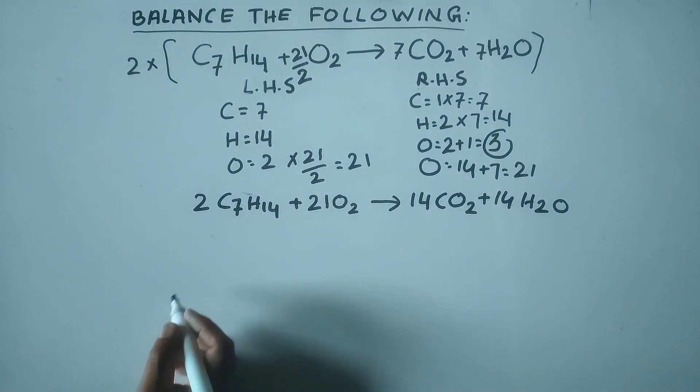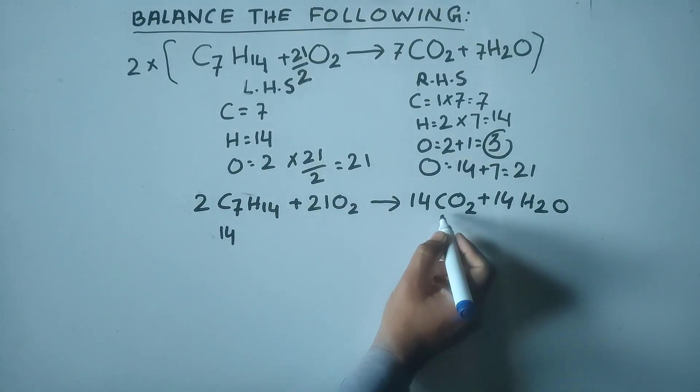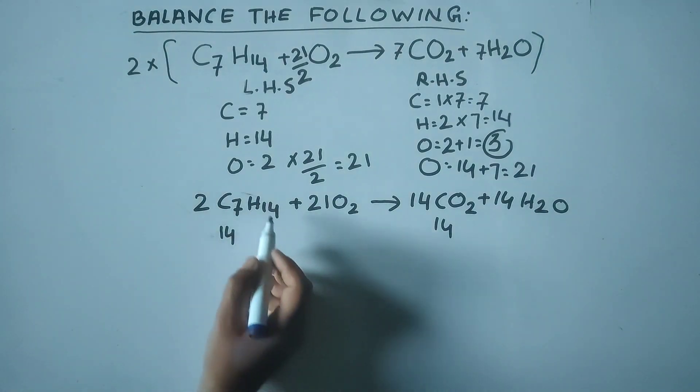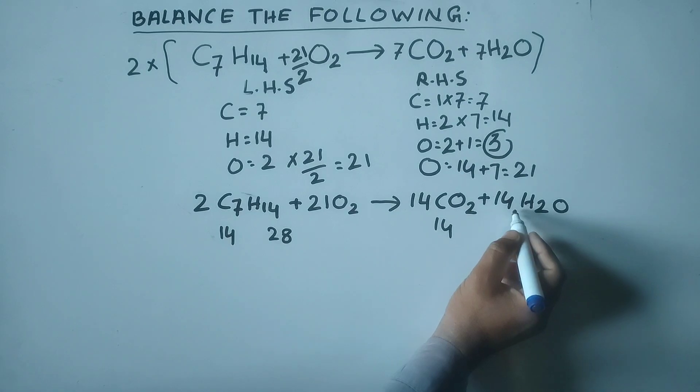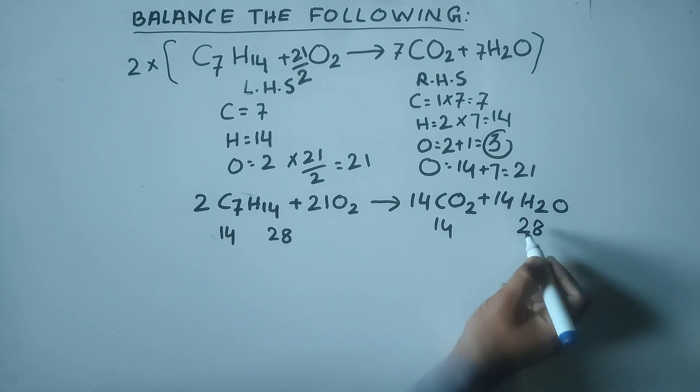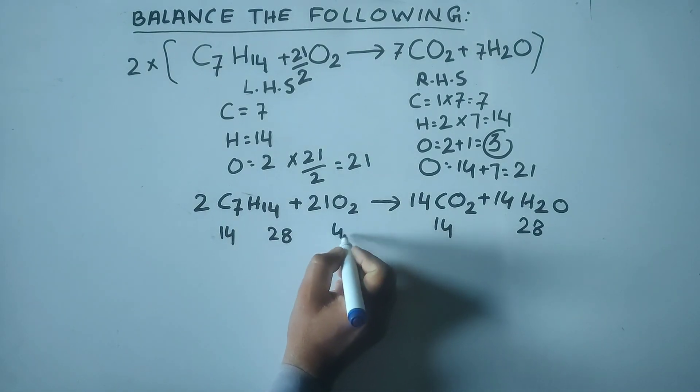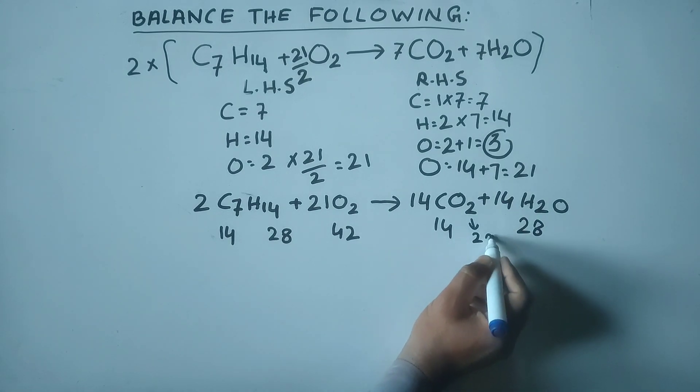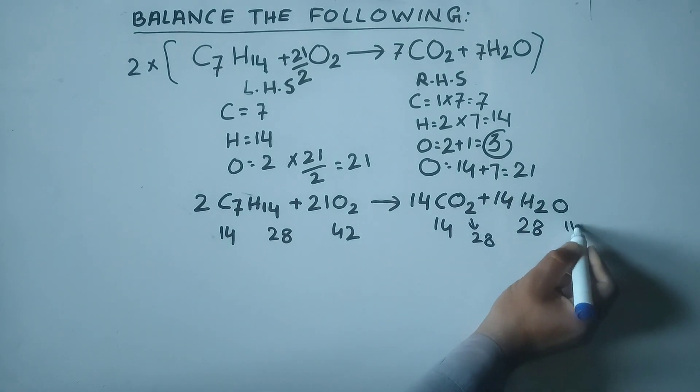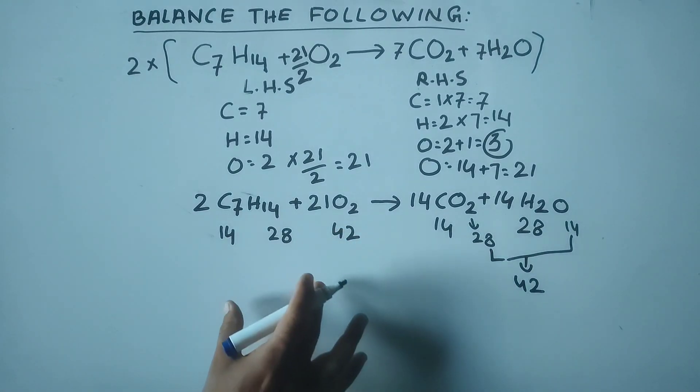Counting atoms: carbon here 14, again here 14 carbon. Hydrogen here 28, here also hydrogen 28. Oxygen here 42, here are 28 oxygen and 14 oxygen here, net oxygen 42. This is the balanced chemical equation.